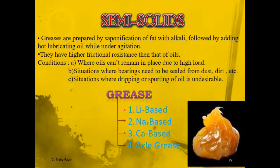Based on the type of soap used, grease can be of many types: lithium-based, sodium-based, calcium-based, and XL-based. The soap type determines the nature of the grease. For example, if you use lithium hydroxide as the alkali during saponification, you get lithium-based soap and therefore lithium-based grease. If you use NaOH, the soap is R-COONa and the grease becomes sodium-based grease.